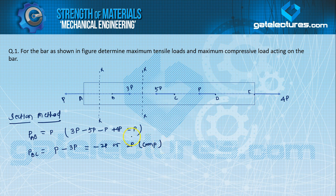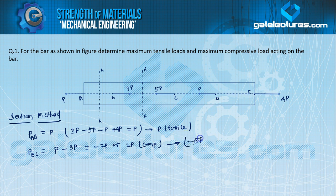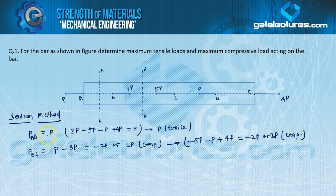This is minus, which means this is compressive. In the AB portion, P is tensile. When we go to the BC section right hand side: minus 5P, minus P, plus 4P equals minus 2P — also 2P compressive. So both right hand side and left hand side are equal. This is the section method. P_BC is equal to 2P compressive, and P_AB is equal to P tensile.